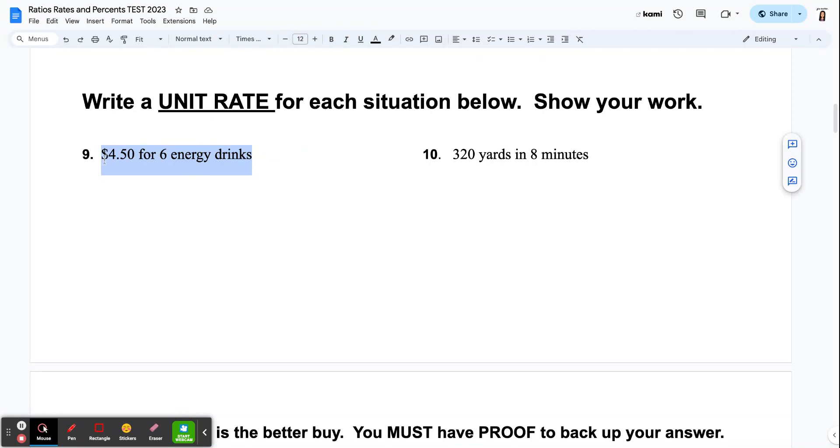I want to know how you can take this information and give me the unit rate for that situation. So if you pay $4.50 for six energy drinks, how much am I paying per energy drink? If you can run 320 yards in eight minutes, how much are you running per minute?